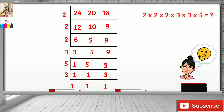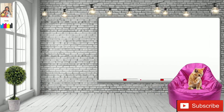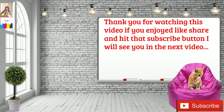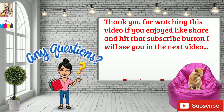So two times two times two times three times three times five equals 360. I think you've got the grip of what LCM is and how to find it. Thank you for watching this video. If you enjoyed it, make sure to like, hit that subscribe button, and I will see you in the next video. If you have any questions, mention them down in the comments — I will surely reply. Bye bye.